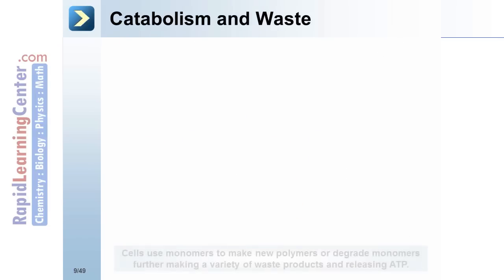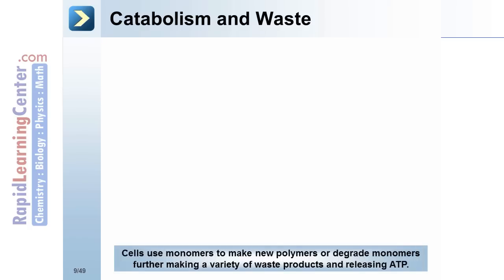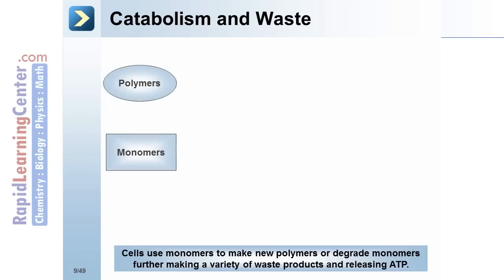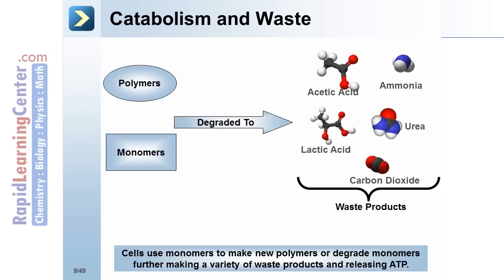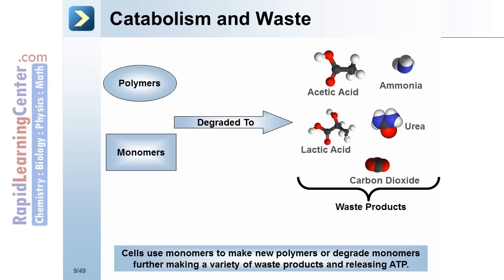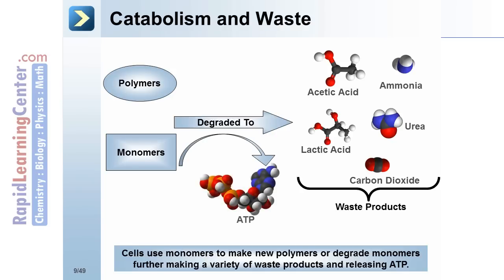Catabolism and waste. Cells use monomers to make new polymers, or degrade monomers further, making a variety of waste products and releasing ATP. Polymers and monomers are degraded to a variety of waste products including acetic acid, ammonia, urea, lactic acid, and carbon dioxide, while releasing ATP.